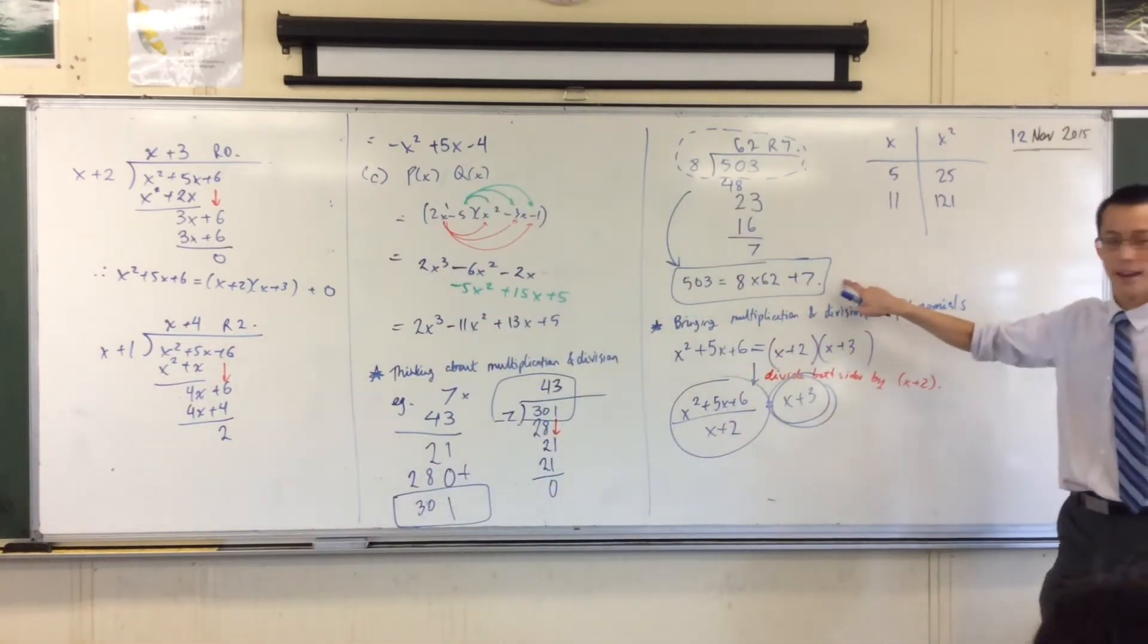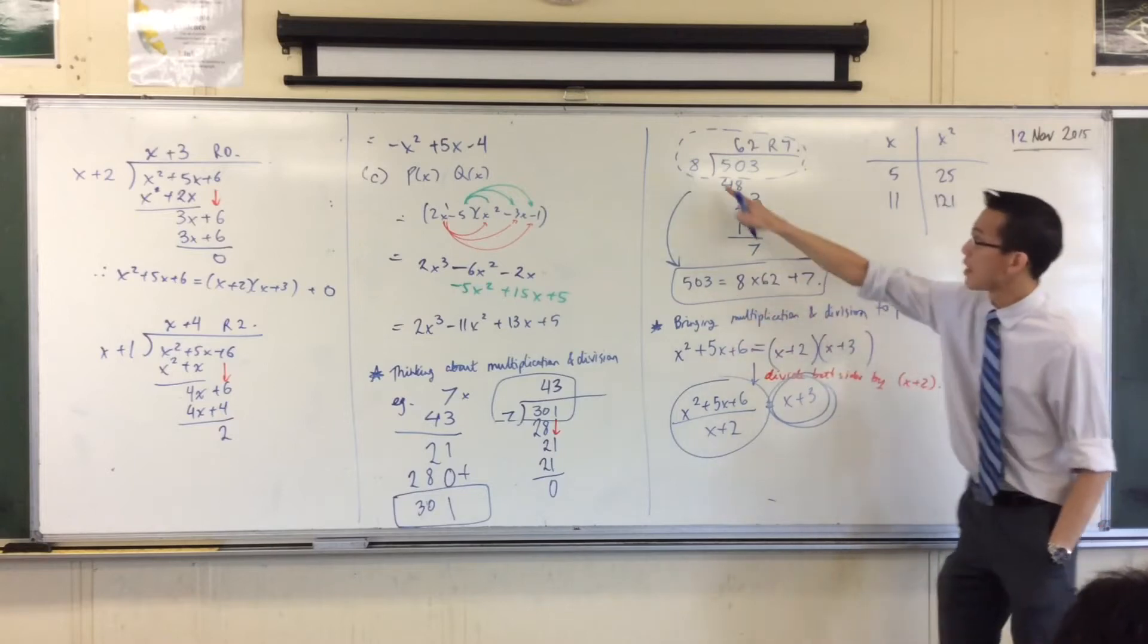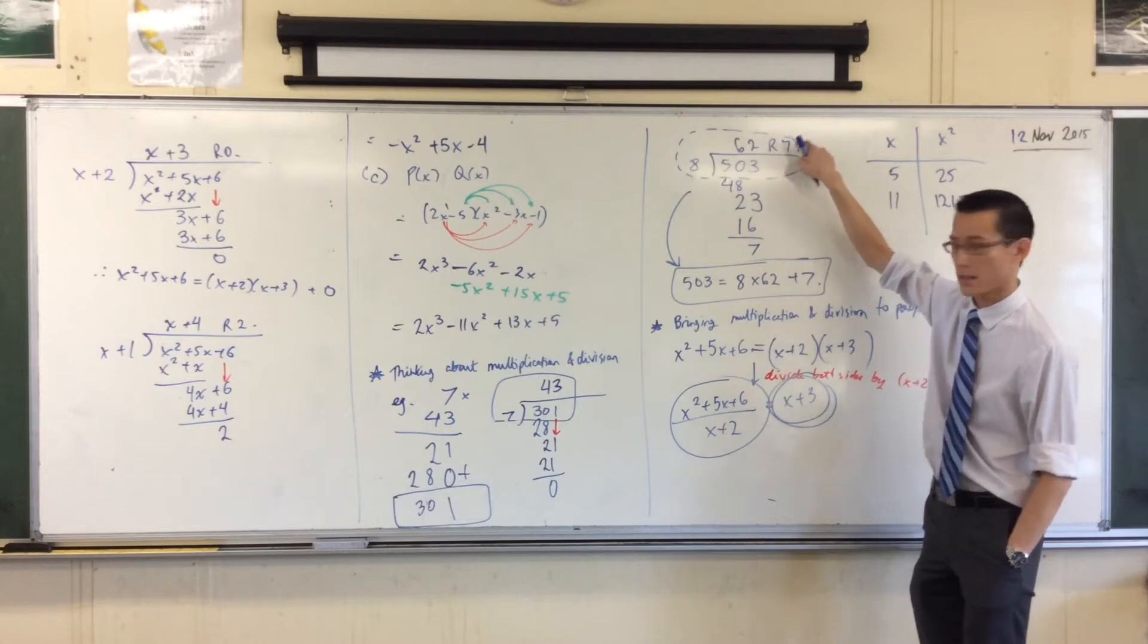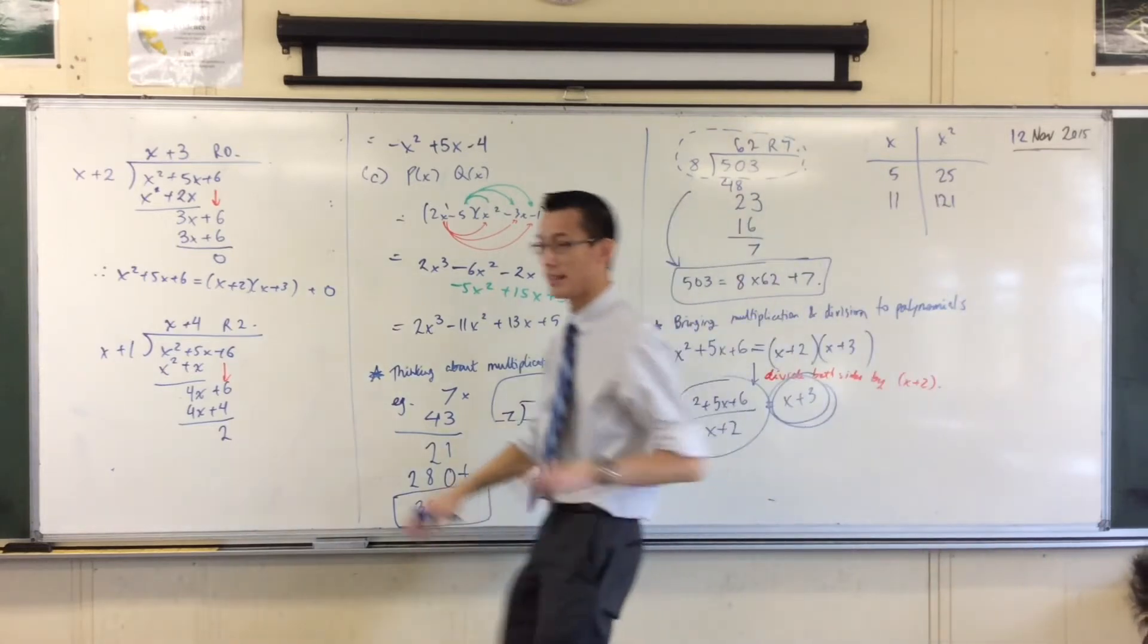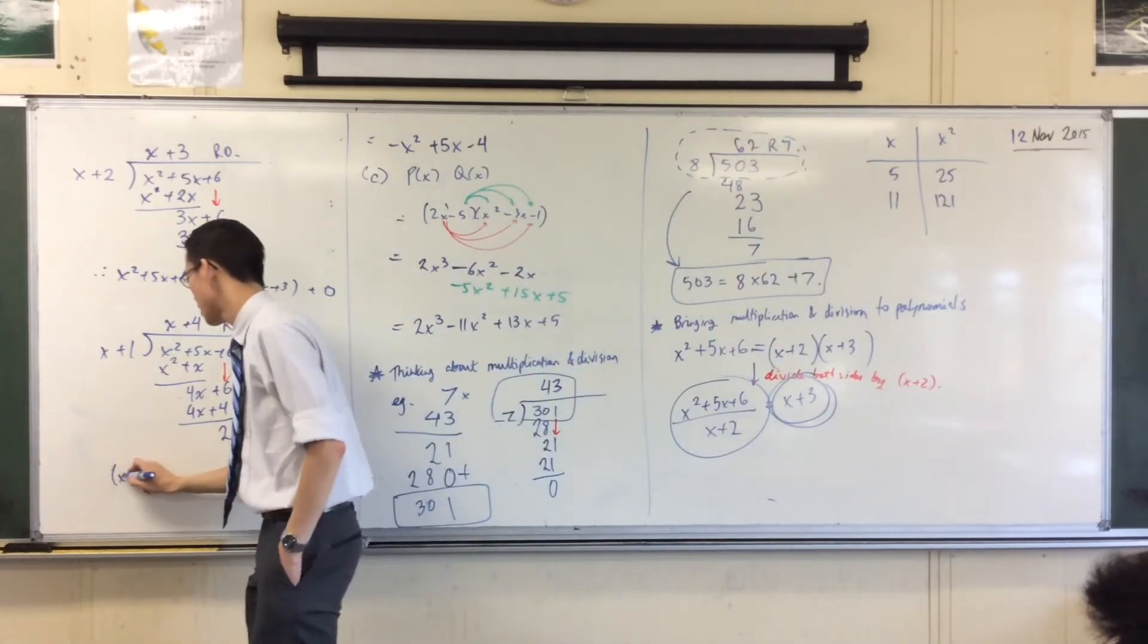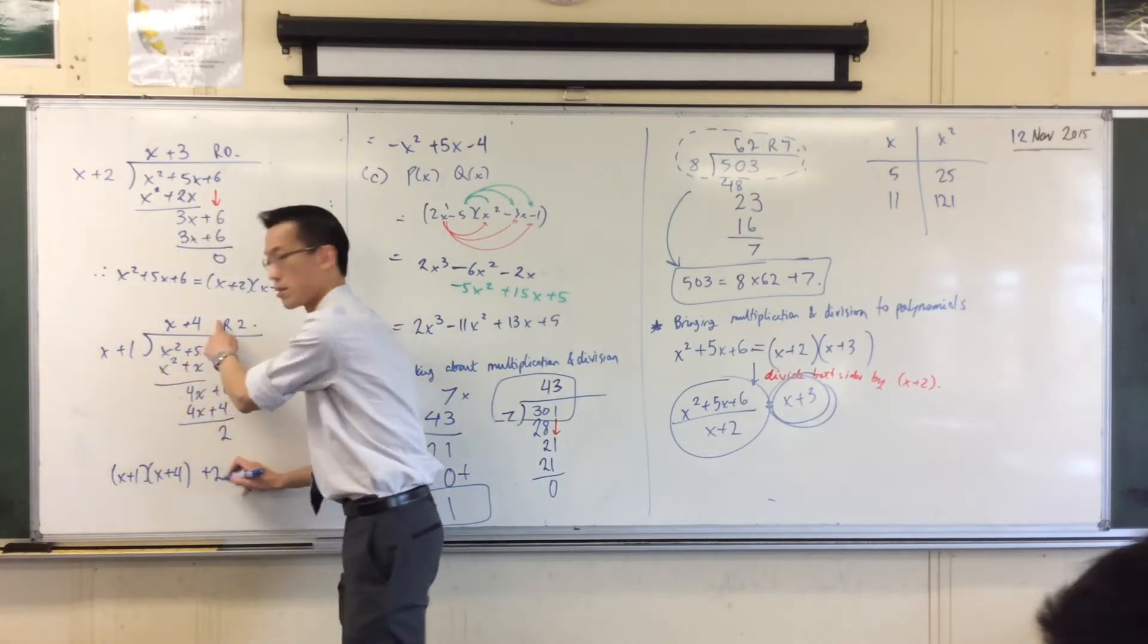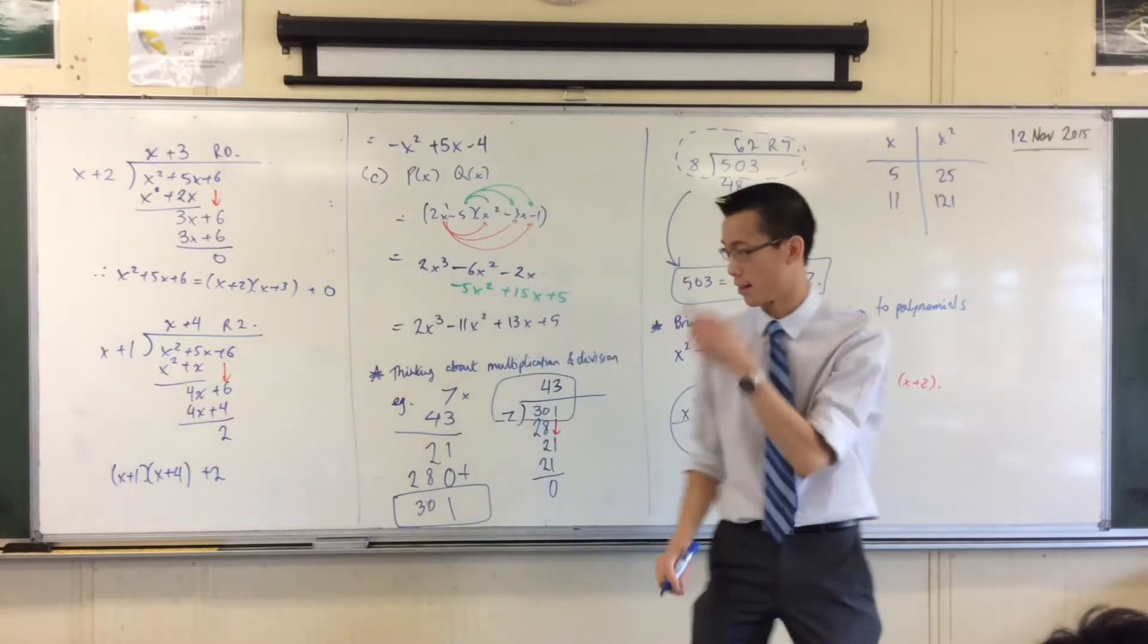And do you remember when we wrote this statement? 503 equals this times this plus this. This times this plus this. Let's see if it works. Allegedly what I've got is this times this plus this. Do you see that? That's what this is saying.